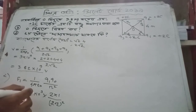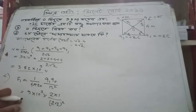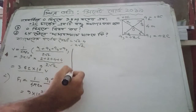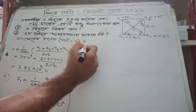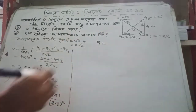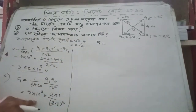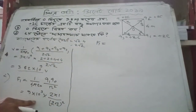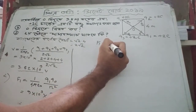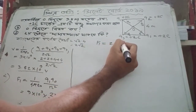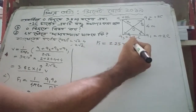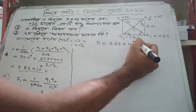So F1 equals A. The calculation gives 2.25 × 10^-9 Newton.